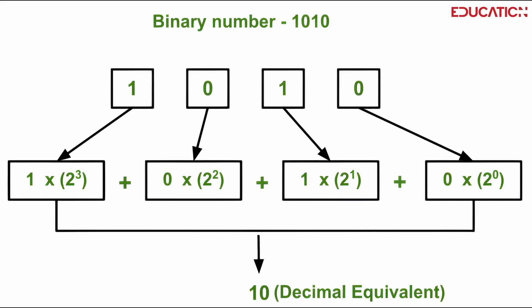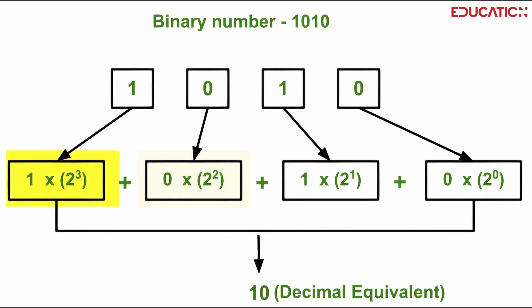For example, to convert the binary number 1010 to decimal, you would do the following: The rightmost digit 0 is multiplied by 2 to the power 0, which is 0. The next digit 1 is multiplied by 2 to the power 1, which is 2. The third digit 0 is multiplied by 2 to the power 2, which is 0. The fourth digit 1 is multiplied by 2 to the power 3, which is 8. Adding up the results gives you 10.